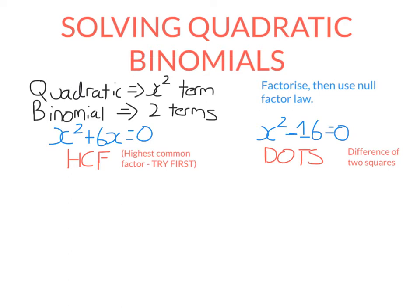To factorise using highest common factor, we write the common factor out the front, then we divide the first term by the common factor. What do I times by x to get x squared? Well, I times by x. What do I times by x to get positive 6x? The answer is positive 6. So now I've got a factorised equation — something times something equals zero. The null factor law says either the first thing is equal to zero or the second thing is equal to zero.